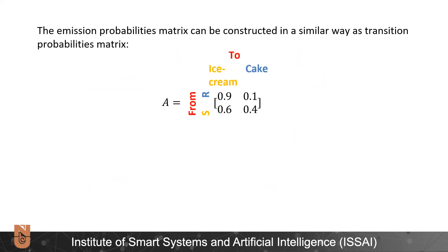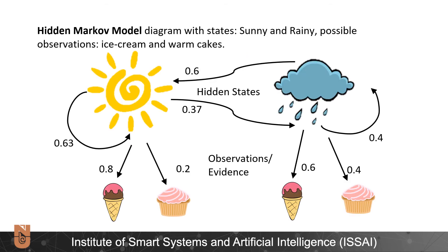So now by putting these values we have estimated we can construct emission probability matrix. The diagram here represents an HMM with two states, sunny days and rainy days, with emissions as ice cream and warm cakes and transition and emission probabilities illustrated as arrows.